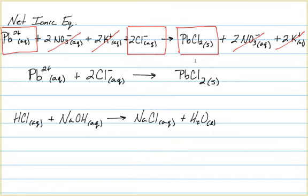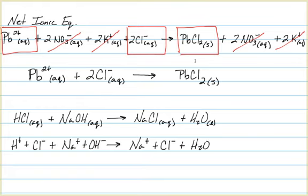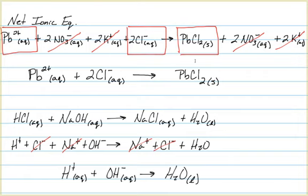Another example is the reaction between hydrochloric acid and sodium hydroxide. We have aqueous HCl reacting with aqueous sodium hydroxide to produce sodium chloride in the aqueous state along with liquid water. Writing out the complete ionic equation, the hydrogen and chloride ions separate apart because HCl is aqueous, and sodium and hydroxide also separate. On the product side, sodium and chloride remain as ions and we have water. We cancel out the sodium and chloride ions that appear on both sides, and our net ionic equation is: the hydrogen ion in aqueous form reacts with the hydroxide ion in aqueous form to produce liquid water.